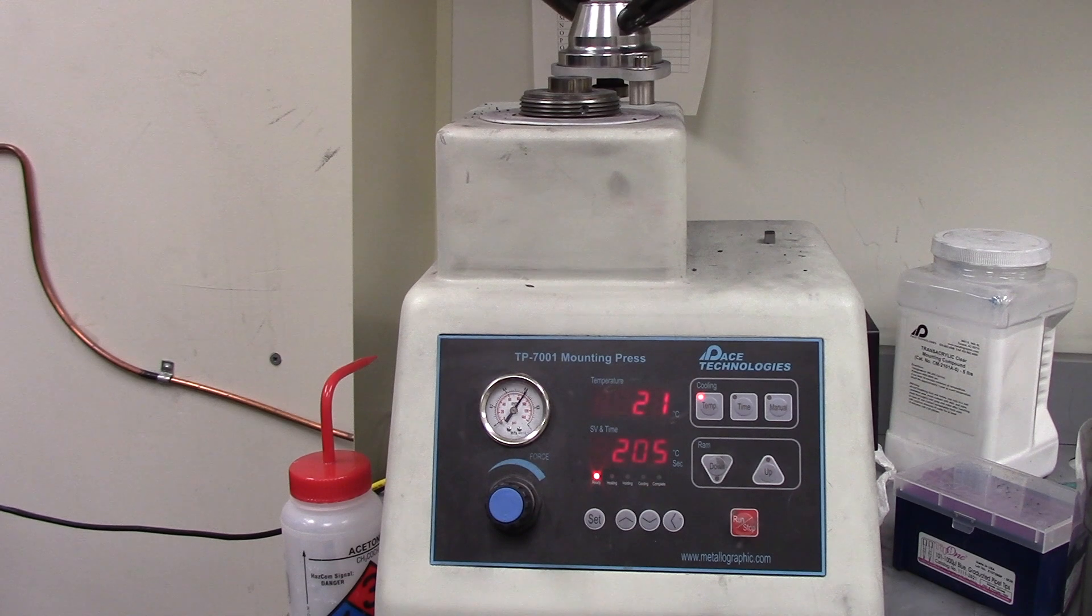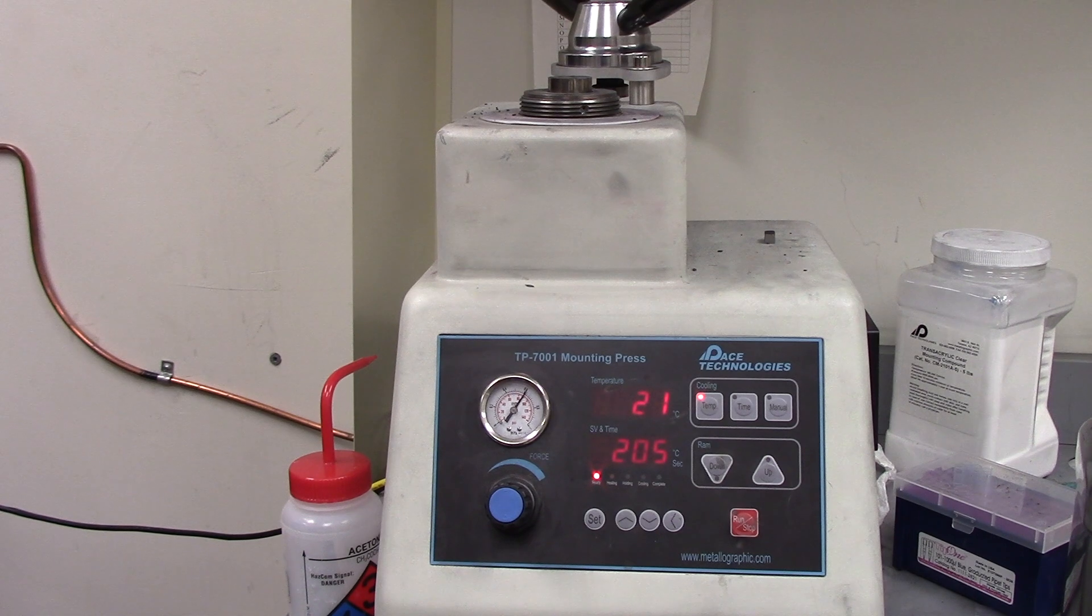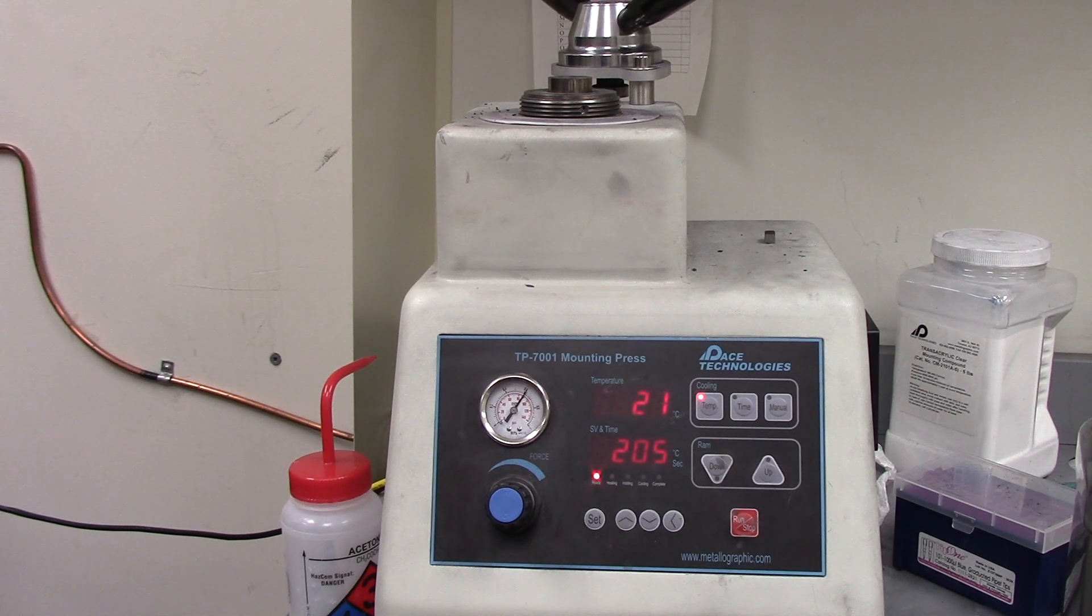At Hopkins, machines such as the TP7001 mounting press are the primary method for mounting samples that have a high tolerance to heat and pressure. With a wide number of mounting powders of different compositions available, you can use this method to mount materials such as metals, semi-conductive wafers, and ceramics.